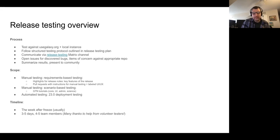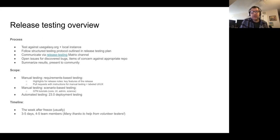The scope for manual testing focuses on two areas: requirements-based testing and scenario-based testing. For requirements-based testing, we use the highlights from the release notes — these are the key items which make the current release, what we put forward, what we advertise, so this is our highest priority. We use pull requests which contain manual testing instructions, as well as PRs labeled UI/UX. It's a curated list where we select PRs which are actually testable and make sense to test manually.